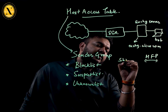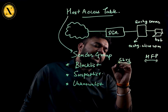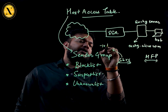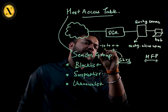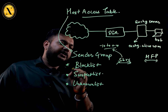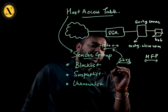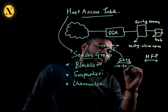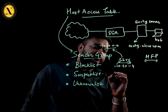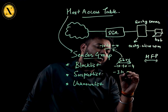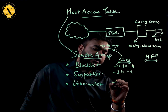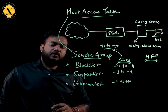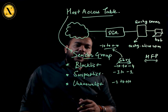There is a Sender Base Reputation Score (SBRS) already defined with a range. The overall range of SBRS is from minus 10 to plus 10. This is segmented among the three sender groups: blacklist is from minus 10 to minus 4, suspect list is from minus 3 to minus 1, and minus 1 to plus 10 comes under the unknown list sender group.